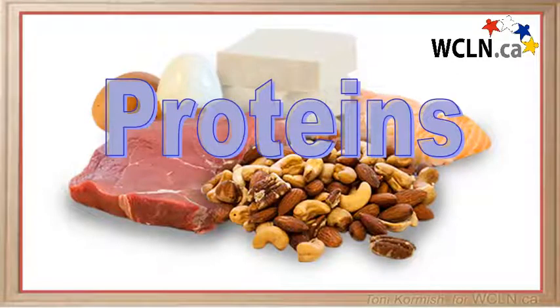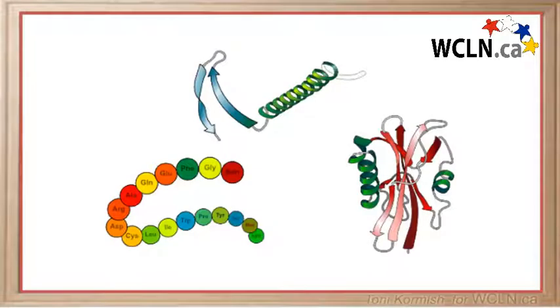There are three levels of protein structure, and you will need to be able to visually identify the difference between these three structures and name the types of bonds that hold them in these configurations.